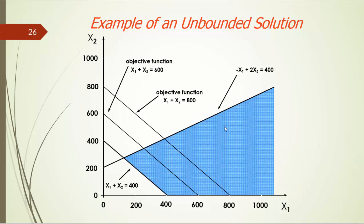In reality, it probably does not make practical sense. So, usually, when unbounded solution occurs, it is more than likely that one or more constraints are missing.